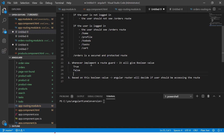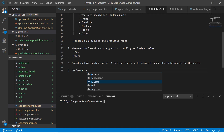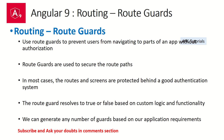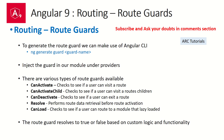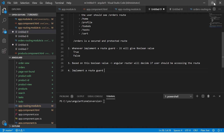So this is the concept of route guards. Now let's implement one. To implement a route guard we use the command ng generate guard, followed by the guard name. Using this command we will generate the route guard.